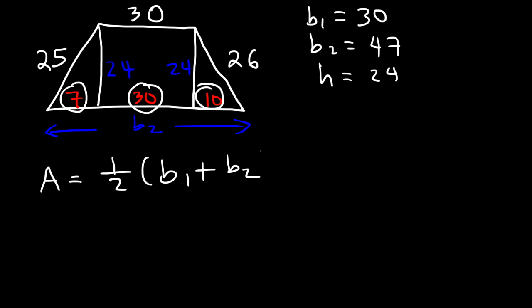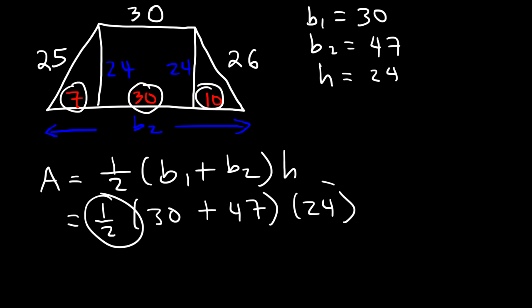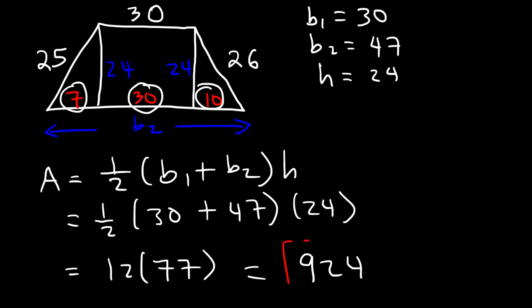So now we could find the area of the entire trapezoid using this formula. So b₁ is 30, b₂ is 47, and h is 24. So 1/2 times 24, that's basically 12. And 30 plus 47 is 77. So all we need to do is multiply 12 by 77. And so the area of the trapezoid is 924 square units. So that's the area of this particular trapezoid.